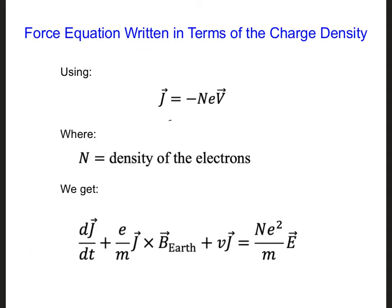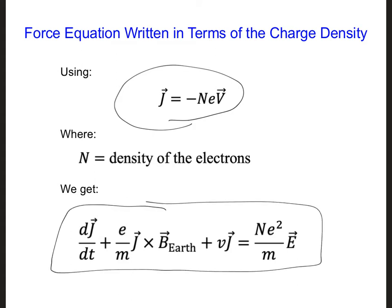Plugging this current density equation into our earlier equation for the forces felt by an electron, we come up with what's shown here. If we take a step back and consider what we have here, we have an equation where the electric field of our propagating electromagnetic wave impacts the J current density because it shows up in this equation.